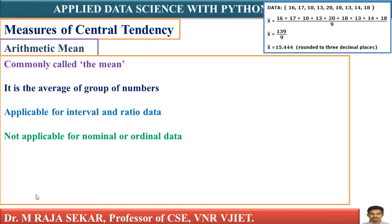It is not applicable for nominal or ordinal data. What is nominal data? That may be gender - male or female. You cannot apply arithmetic mean for gender. For example, male if I say 1, female if I say 0. 0 plus 1 by 2 will not give any significant information. Therefore, arithmetic mean is not applicable for nominal data.